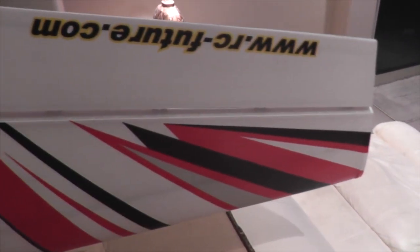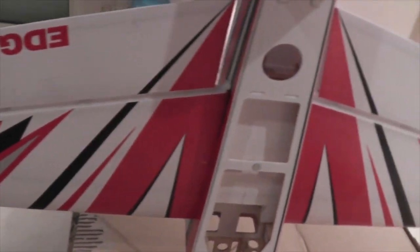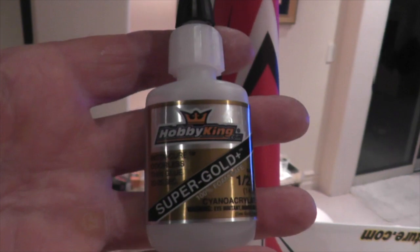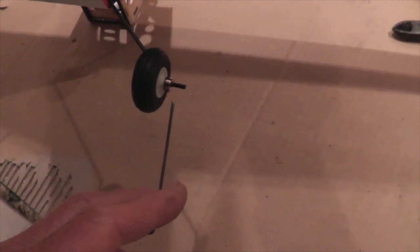And next, we glue the aileron hinges in on both sides. I'm going to let that soak in overnight. And I've also got the elevator hinge glued in using Foam Safe CA. And the wheels go on next, and we just tighten up the collar with a little allen wrench here.